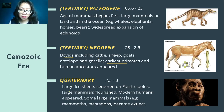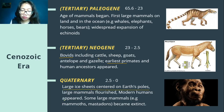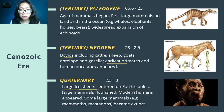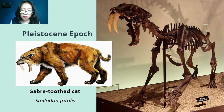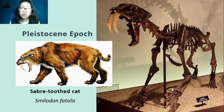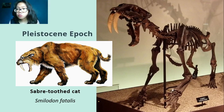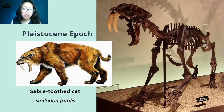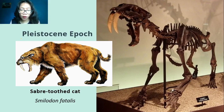During the Quaternary Period, the ice sheets centered on Earth's poles and large mammals flourished. Modern humans appeared, and some large mammals also became extinct. Something notable is the Pleistocene Epoch — the first in the Quaternary Period — which is marked by the Last Ice Age. There were some ice ages in our history, but the last one happened in the Pleistocene Epoch.